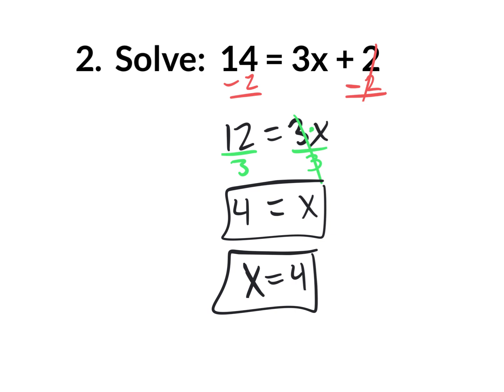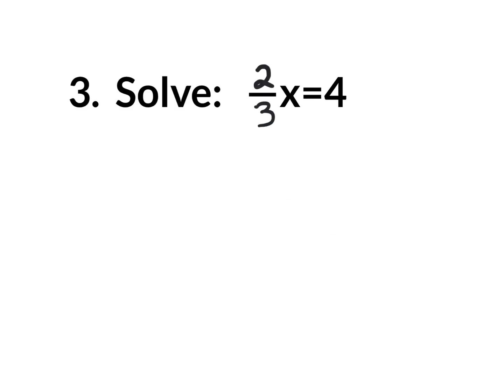Let's move on to the next one — we're alternating turns, so whoever worked the last one will now watch and help, and whoever watched will now work. It's a simplified equation — no distributive property, no combining like terms. Here's the x; you want it by itself. This might confuse some people. It would be easier if it said 2x equals 4 — all you'd do is divide by 2. But it says 2 divided by 3 x equals 4.